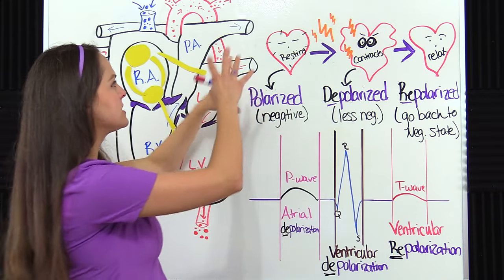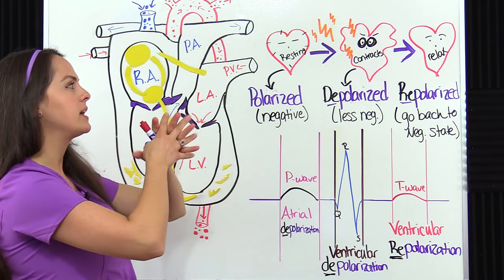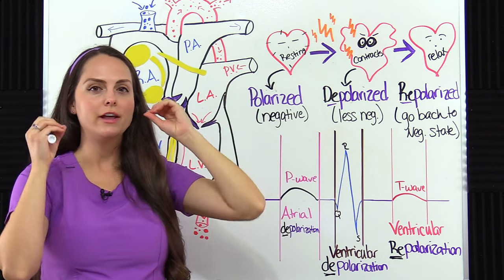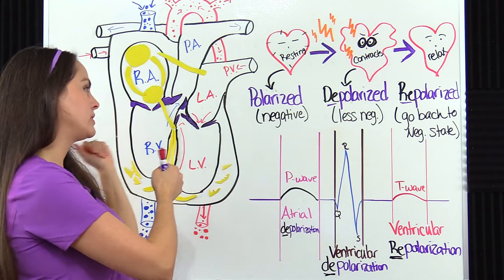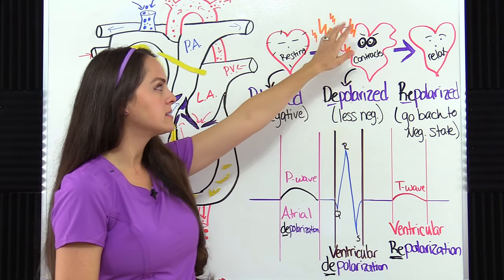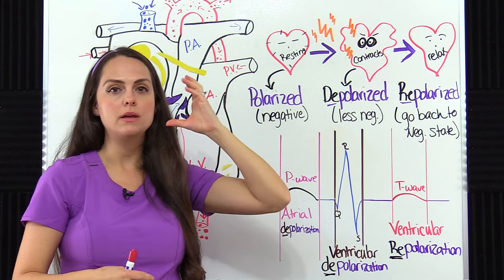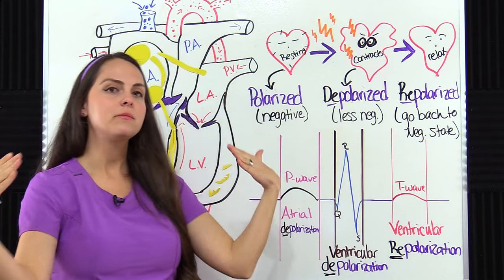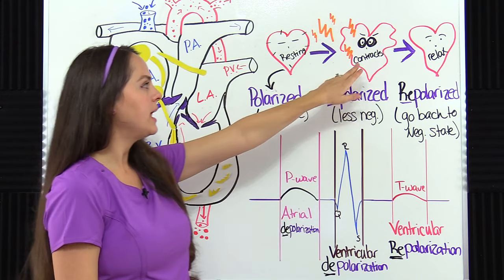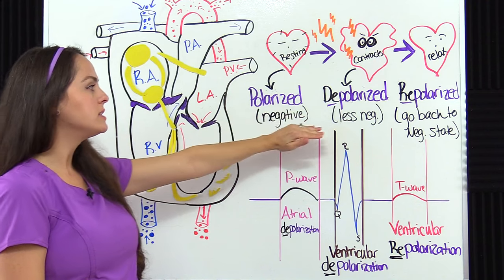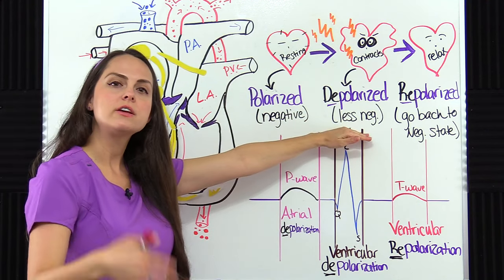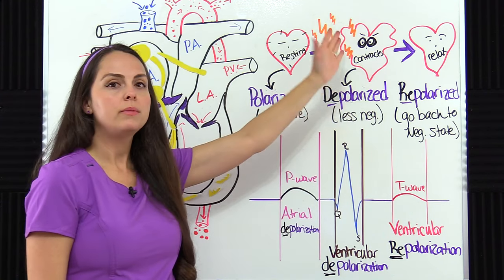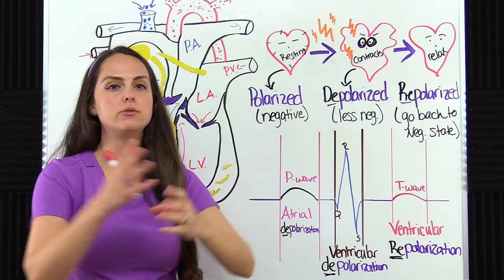There's a lot of sodium outside the cell and it would love to get on the inside. So whenever this cell receives a jolt of electricity from the electrical conduction system, it really changes that cell membrane and causes it to be more permeable. So that sodium can get inside the cell. The sodium goes inside and changes its state from being negative to less negative — a little bit more positive — because sodium is positive, and it causes depolarization. Whenever the cell becomes depolarized, it causes it to contract.